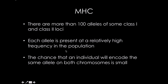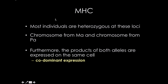There are more than 100 different alleles — different versions of the same gene — at some class 1 and class 2 loci. Each allele is present at a relatively high frequency in the population because it is a selective advantage. The chance that an individual will encode the same allele on both chromosomes is relatively small, so most individuals are heterozygous at these loci. Furthermore, the products of both alleles are expressed on the same cell, meaning they are co-dominant, which provides a selective advantage.